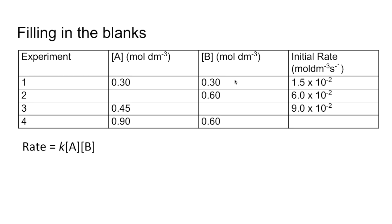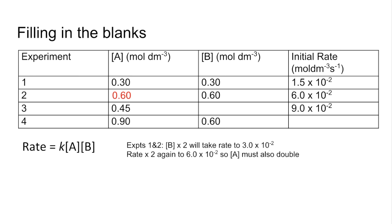First, look at how B affects the rate. B has doubled and it's first order, so the rate should go up by a factor of 2 as well, up to 3 times 10⁻². Then look at what the rate has done on top of that — it's gone up by another factor of 2, up to 6 times 10⁻². So it's doubled again, which means A must have doubled — A goes up to 0.6. Alternatively, you could note that's an overall four-fold increase: B accounted for a factor of 2, so A must also account for a factor of 2.